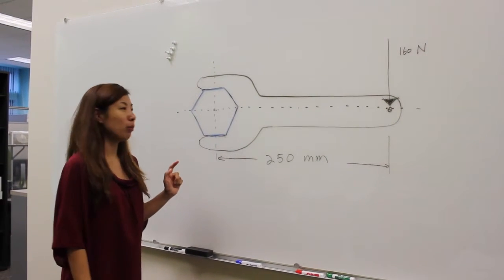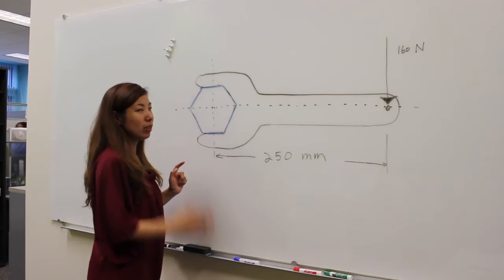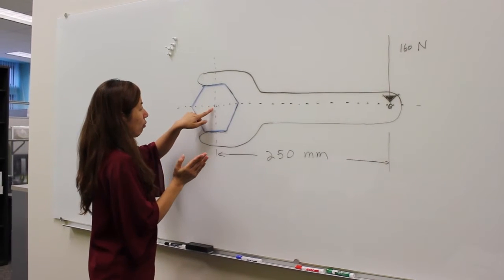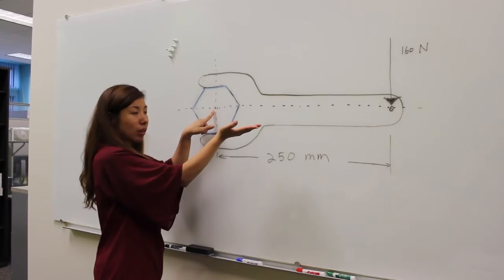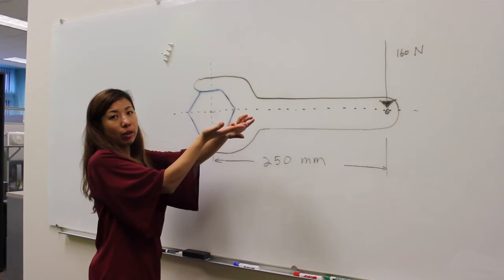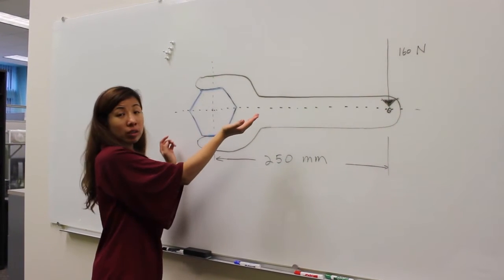So how do you know the direction of the moment? Take out your right hand and from the reference point, extend your hand so that your four fingers curl toward the direction of your force.